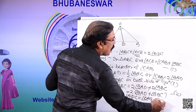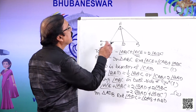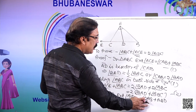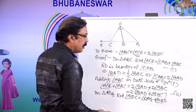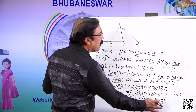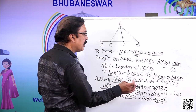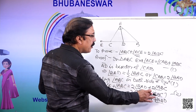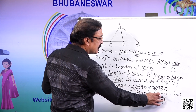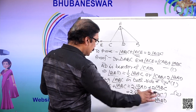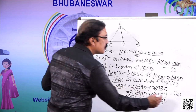In triangle ADB, the exterior angle is ADC. Angle ADC is equal to the sum of the interior opposite angles, that is angle DAB plus angle ABD. DAB or BAD and ABD. Here, DAB plus ABD equals ACE plus ABC.